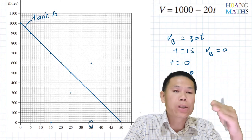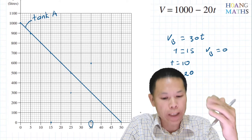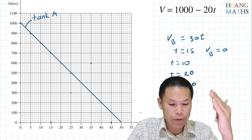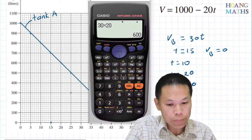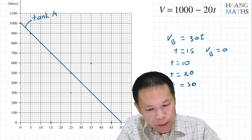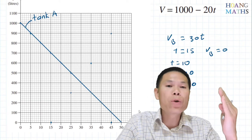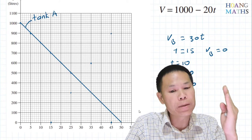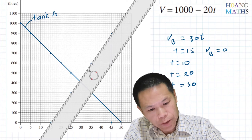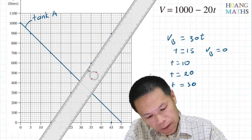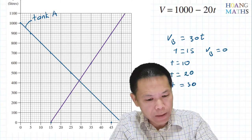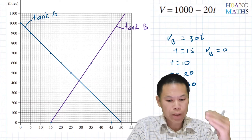I can work out one more point. Another 10 minutes later is t = 45, which is 30 minutes after t = 15. So 30 × 30 = 900, meaning at t = 45, V = 900. Now I use a ruler and connect these points together, extending the line slightly. I label it Tank B — done.